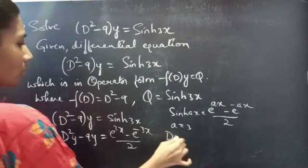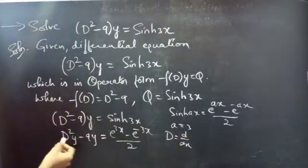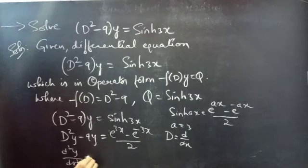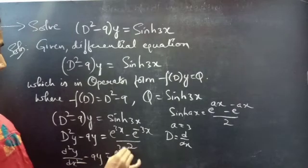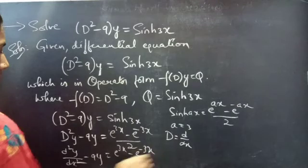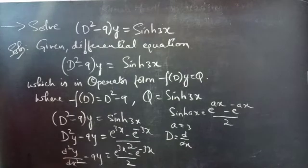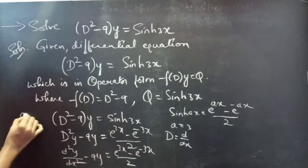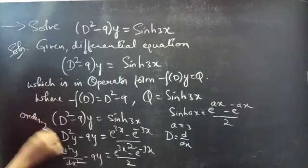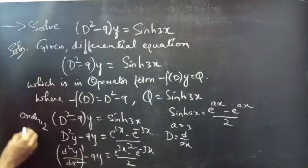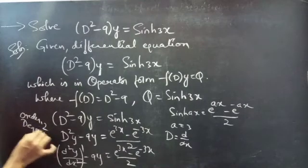We know that differential operator D = d/dx, so we can write the equation as d²y/dx² - 9y = (e^(3x) - e^(-3x)) / 2. The highest derivative is d²y/dx², so the order is 2. The highest power of the highest derivative is our degree, so degree is 1.